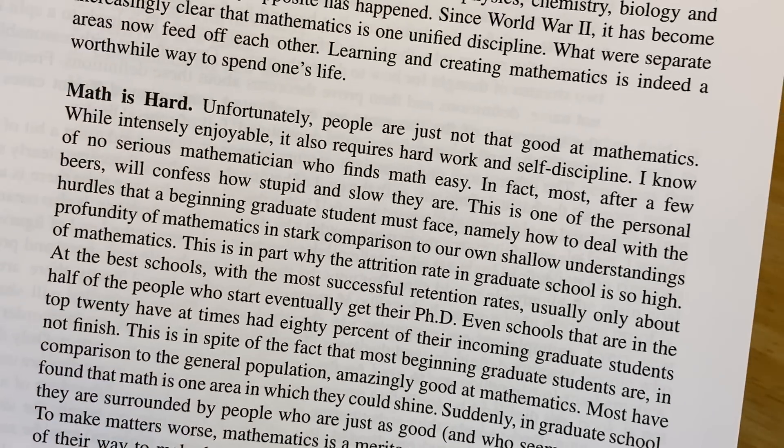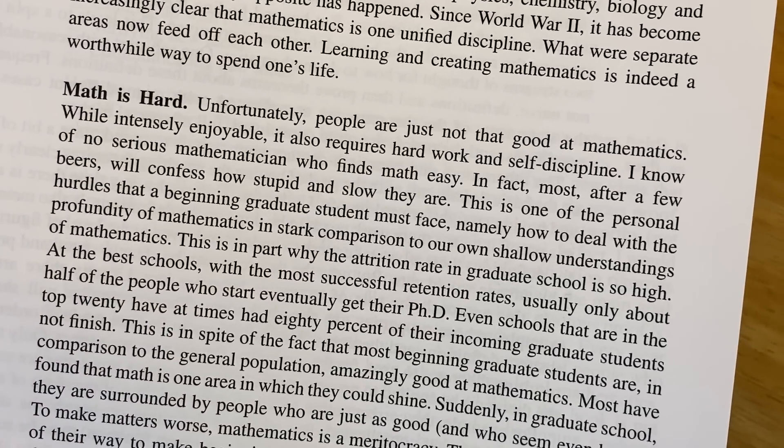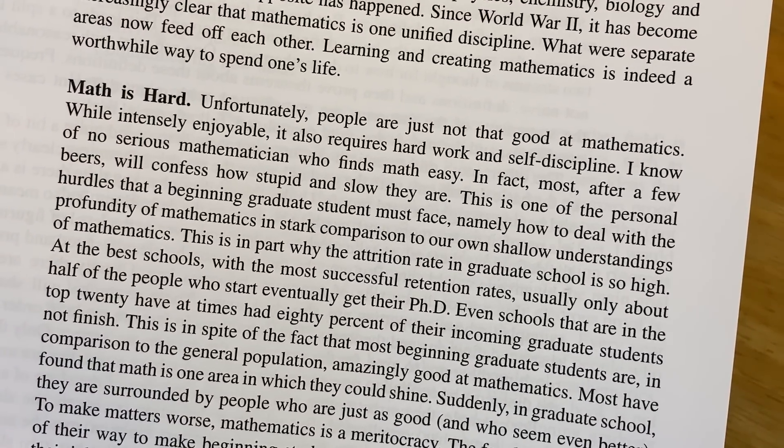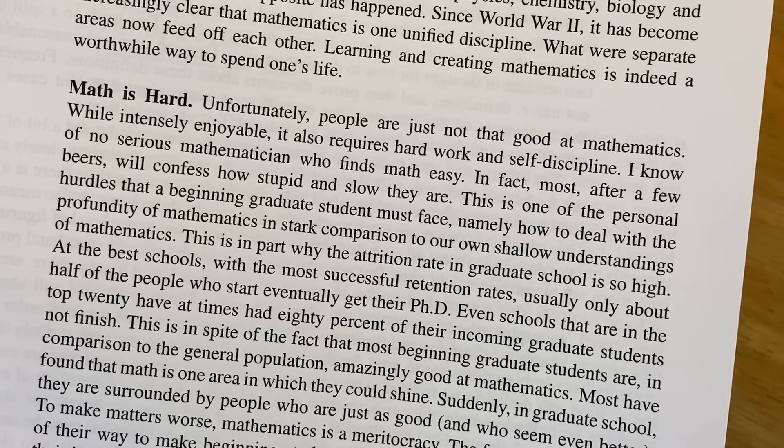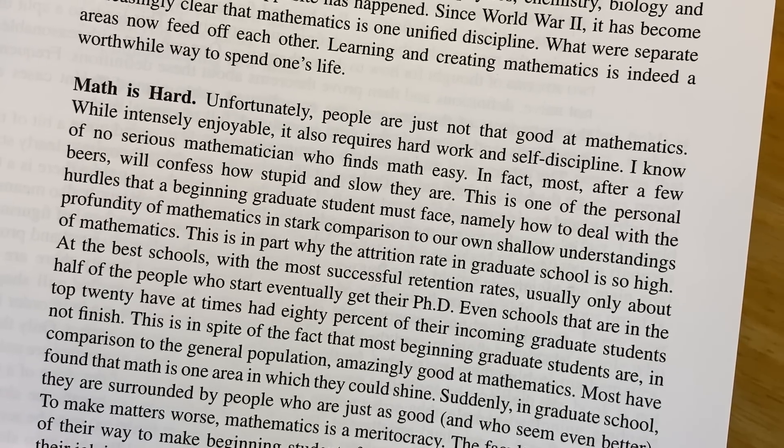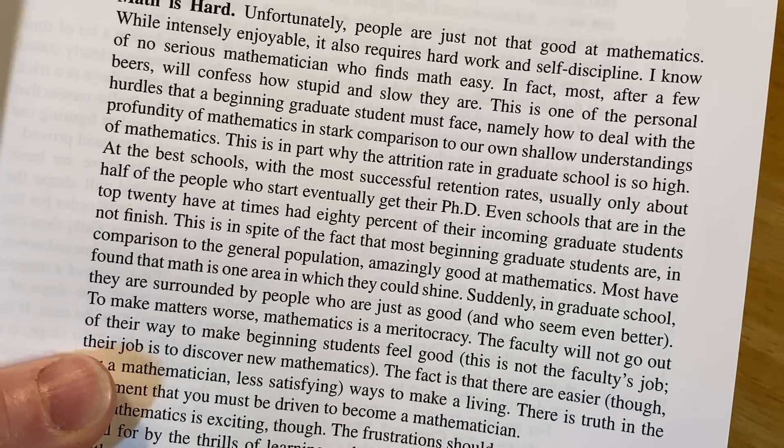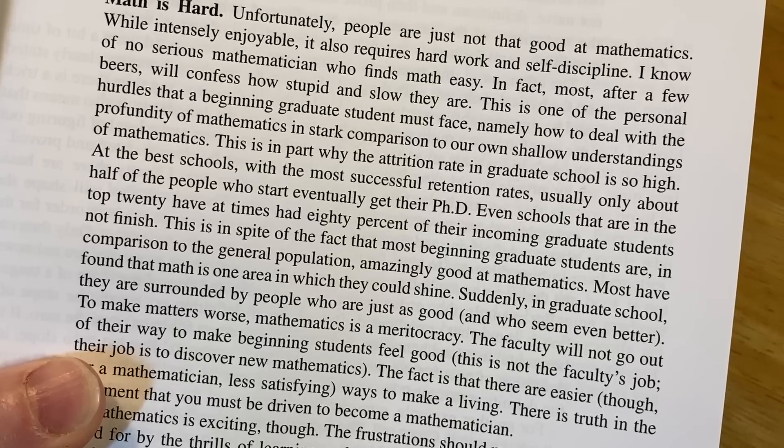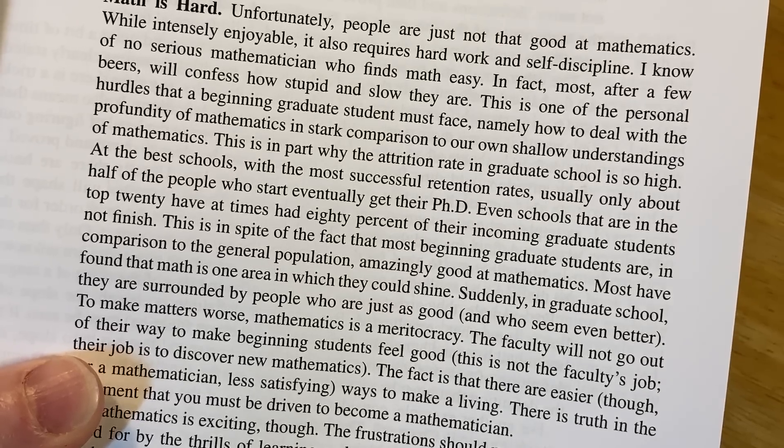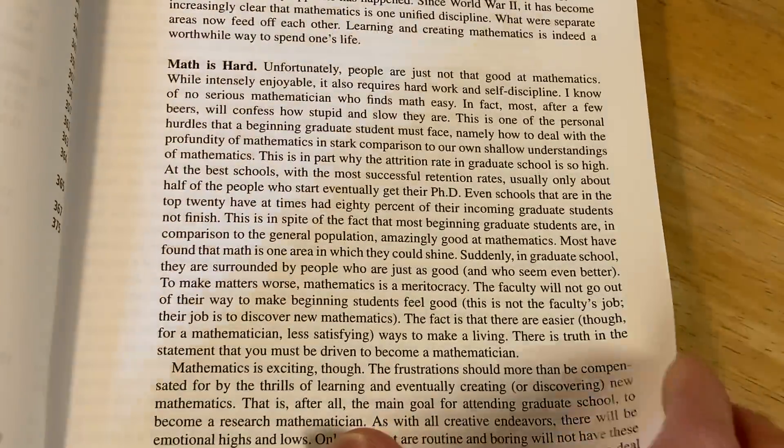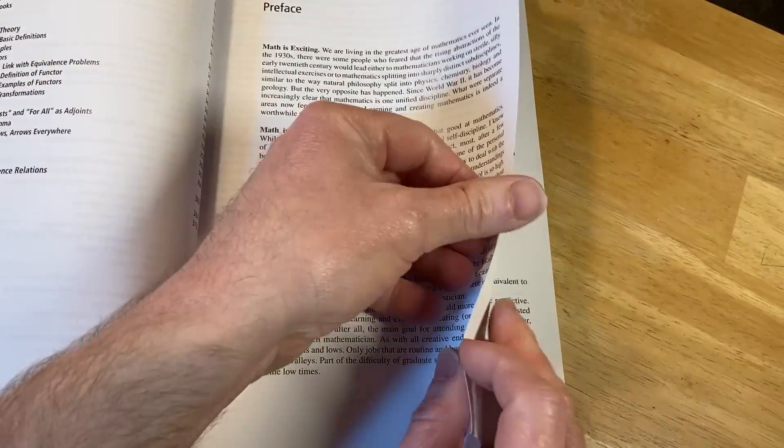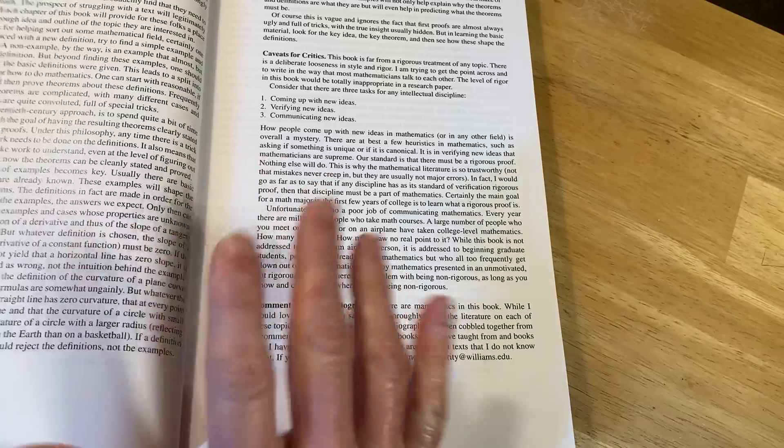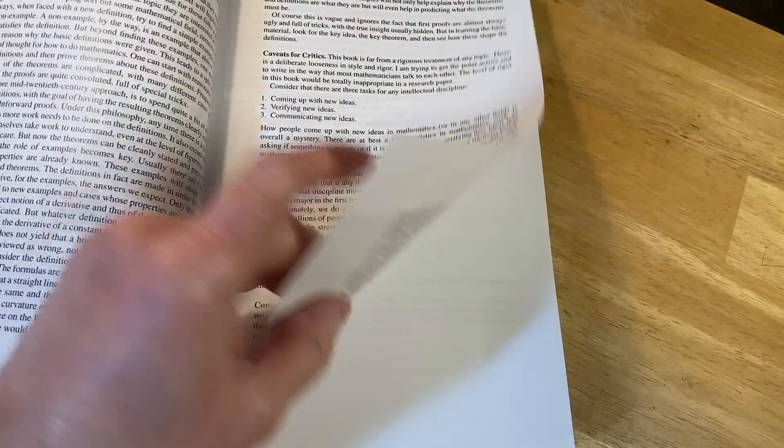This is in part why the attrition rate in graduate school is so high. At the best schools with the most successful retention rates, usually only about half of the people who start eventually get their PhD. Even schools that are in the top 20 have at times had 80% of their incoming graduate students not finish. This is in spite of the fact that most beginning graduate students are, in comparison to the general population, amazingly good at mathematics. And just get the book. It's worth it. I'm going to keep reading this, but I'm going to show you something else because I can just keep reading the entire book.